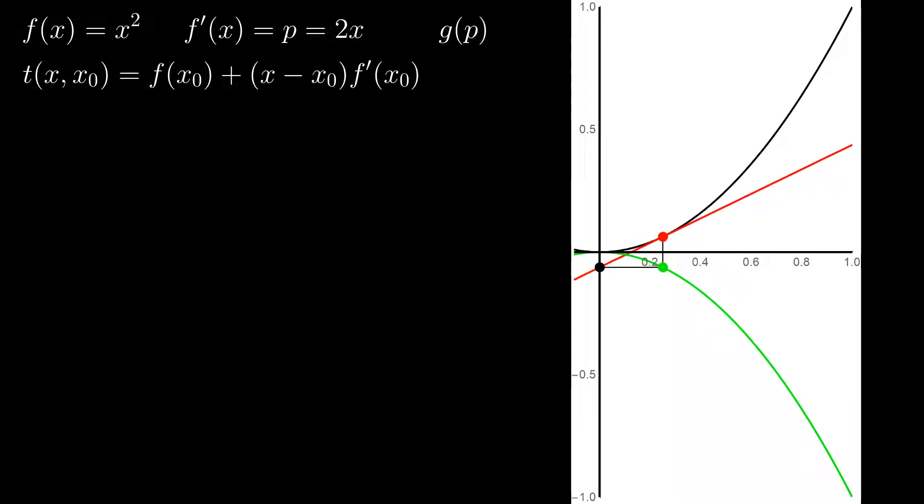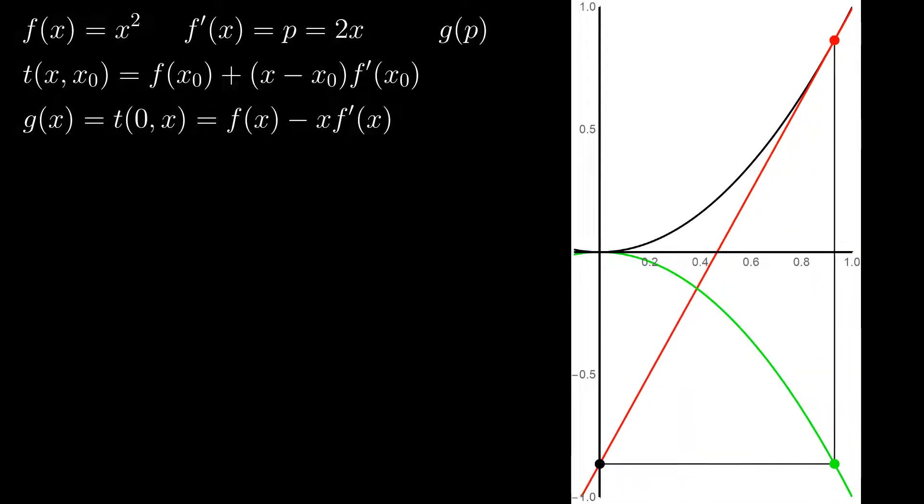So, let's write this down as a function of x. We are interested in an expression for the green curve. We said for each x-coordinate, the corresponding y-coordinate is equal to the y-coordinate of the intersection of the tangent of the original function f and the y-axis.